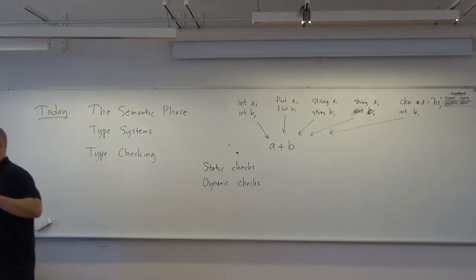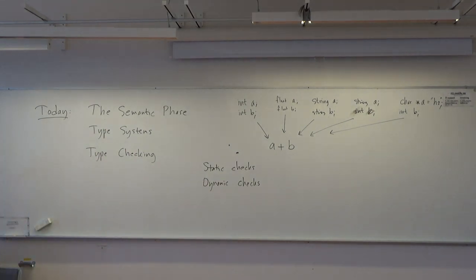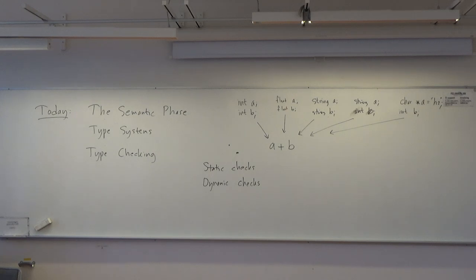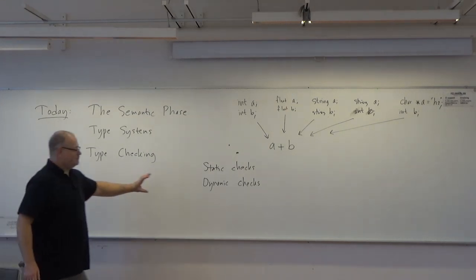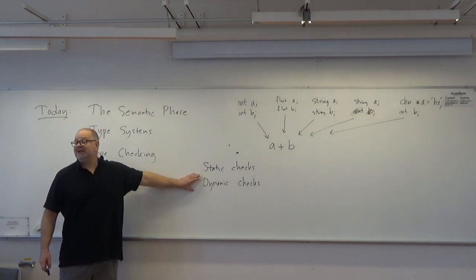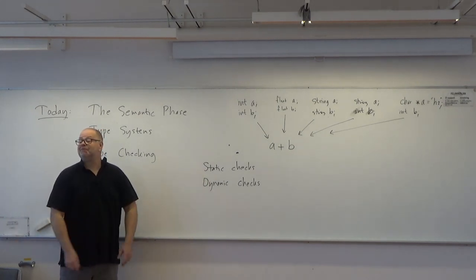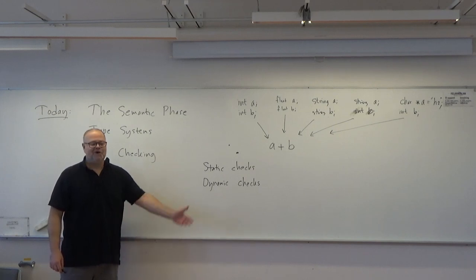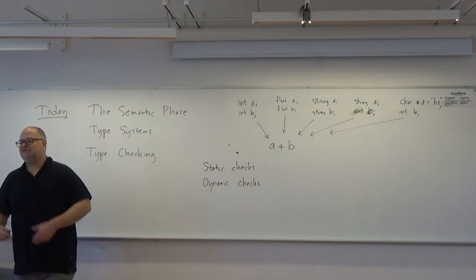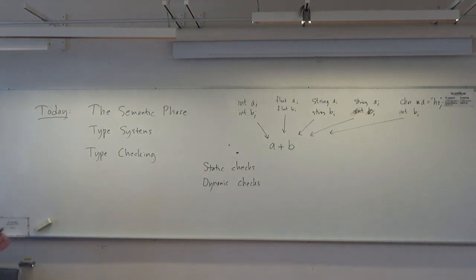Usually you want static checks instead of dynamic checks, if you can choose. Why? If you have static checks, the program is checked when you're compiling it, so you get the error messages at compile time when you as a programmer are working with the program. If you have dynamic checks, then you get the error message when the user is sitting with the program and it runs. You as the programmer are better able to fix the errors than the user would be. Usually it's better to get the error messages earlier.